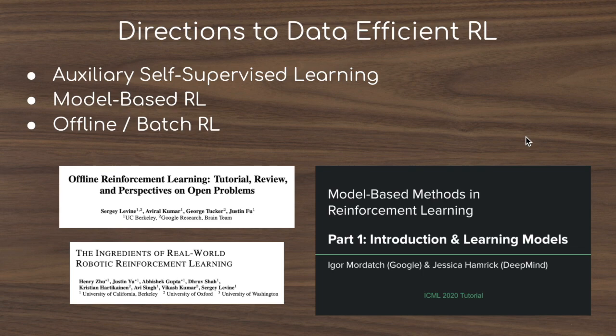We have two loss functions in a multitask learning setup: the Q-learning loss and the contrastive consistency loss.